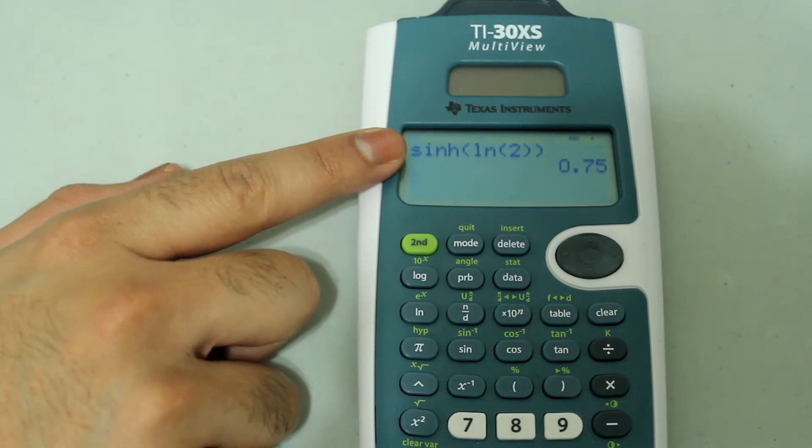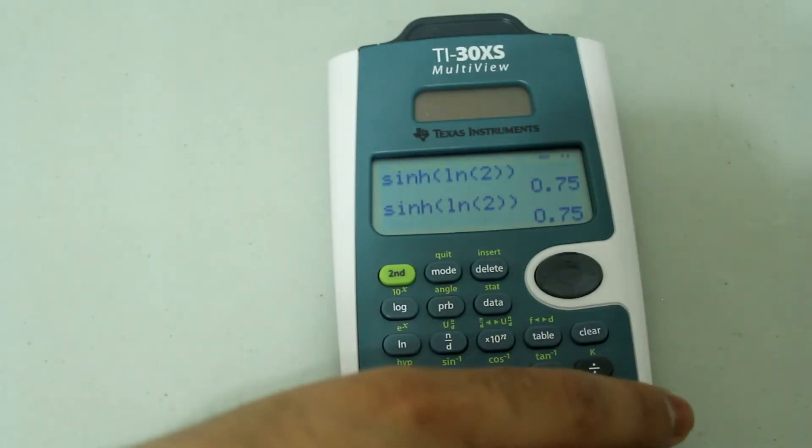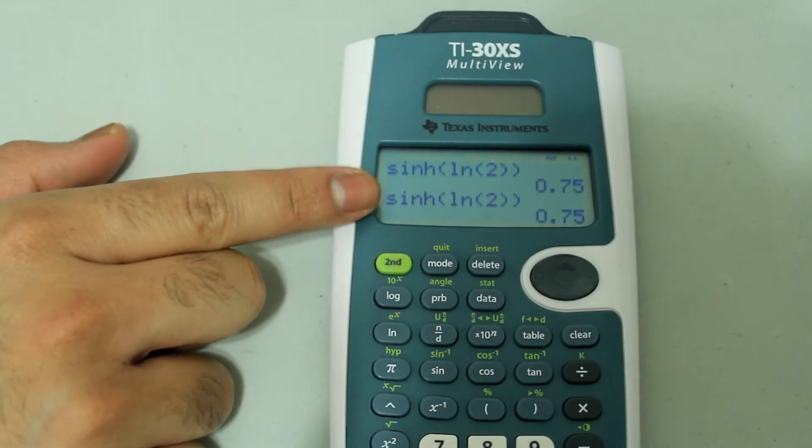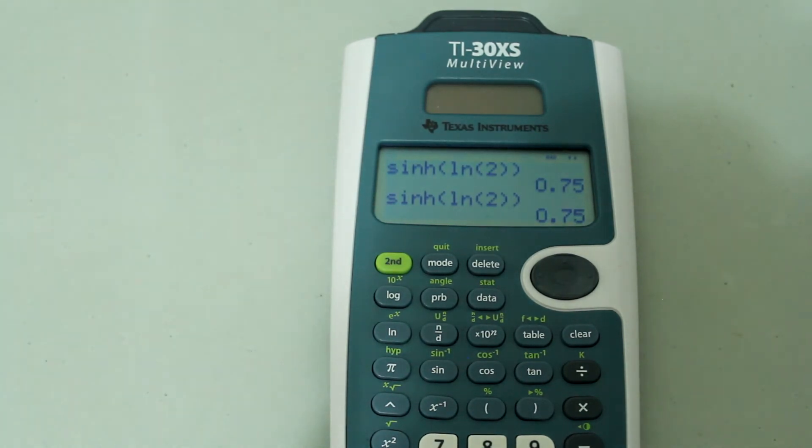If I do the same calculation again, all I need to do is press ENTER and it will just do the previous calculation. So even in radian mode, I get the exact same answer. I just thought it might be worth mentioning that.